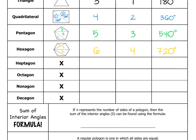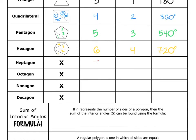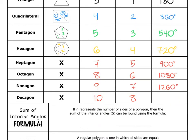We can continue this pattern throughout the table. A heptagon has seven sides, an octagon has eight sides, a nonagon has nine sides, and a decagon has ten sides. The number of triangles in each of those different types of polygons would be 5, 6, 7, and 8, respectively. So the sum of the interior angles would be 900 degrees, 1,080 degrees, 1,260 degrees, and 1,440 degrees.